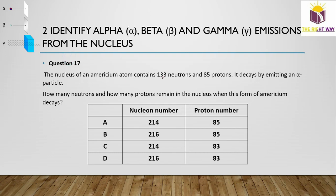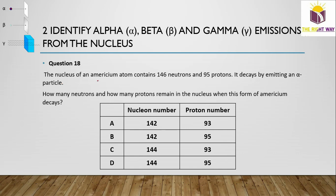Question 17: A nucleus of astatine contains 133 neutrons and 85 protons. It decays by emitting an alpha particle, which takes away 2 protons and 2 neutrons. After decay: neutrons = 133 − 2 = 131, protons = 85 − 2 = 83. The nucleon number is 131 + 83 = 214, proton number is 83. So option C (214, 83) is correct.